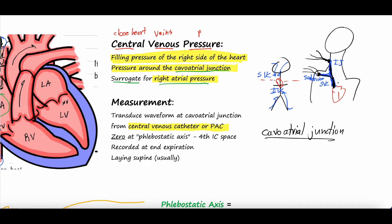With the catheter sitting right at the cavo-atrial junction, you can transduce a pressure to see what the right atrial pressure is. You can also put central lines in the femoral veins in the groin, but those don't reach the cavo-atrial junction — so getting a CVP off a femoral central line is essentially useless. It has to be a central line in the internal jugular or subclavian vein, with the catheter tip as close to the cavo-atrial junction as possible.